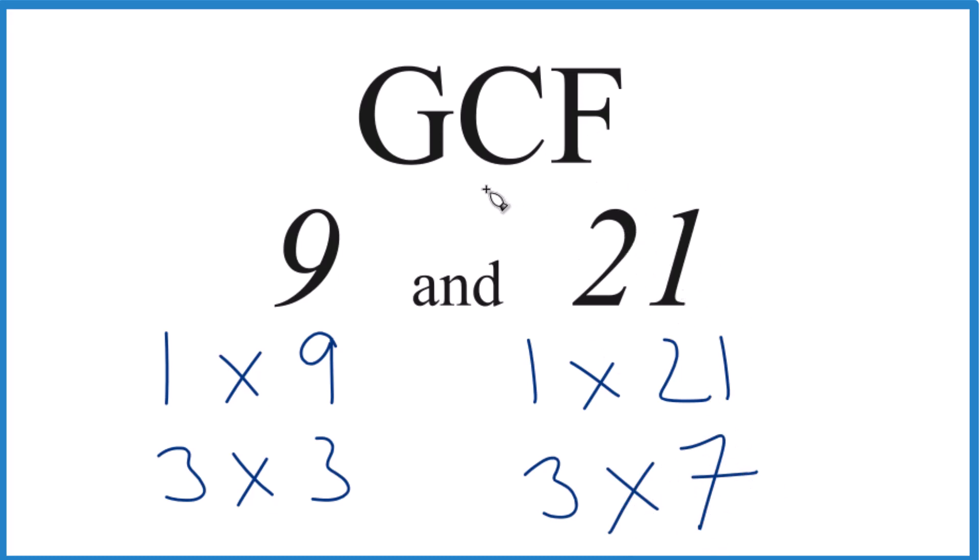So we have our factors. Now we see what's in common. Well, one goes into nine and one goes into 21 evenly, and three, that goes into nine and 21, but that's it.